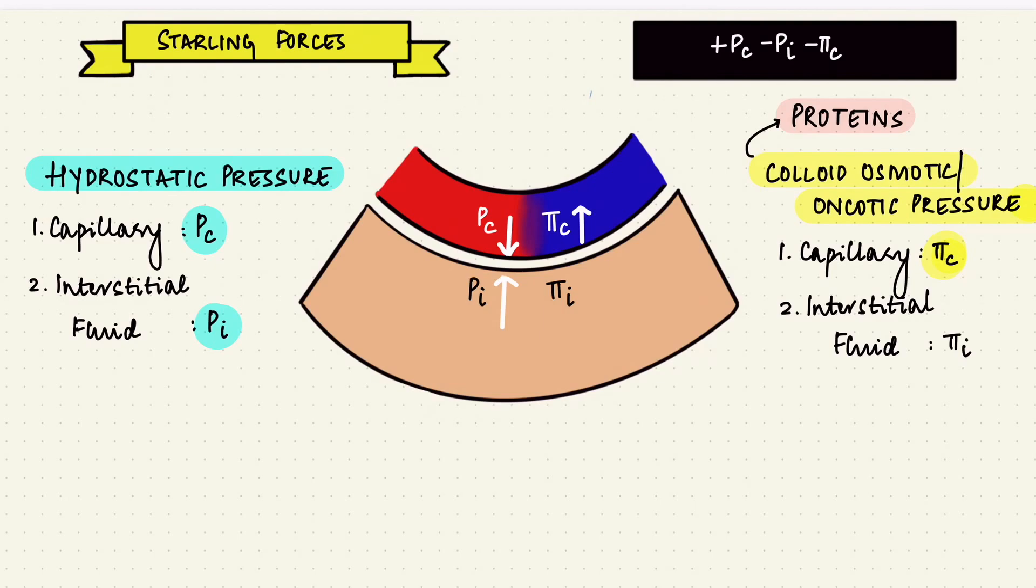The interstitial colloid osmotic pressure is from proteins in the interstitium. In opposition, it pulls fluid out of the capillary. But since the capillary membrane has pores so small that proteins find it hard to get through, this value is lower, but it's still positive.